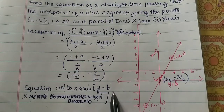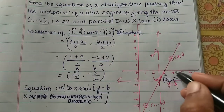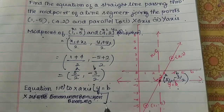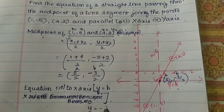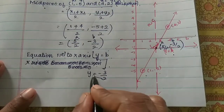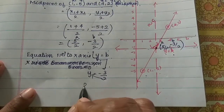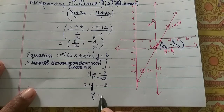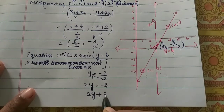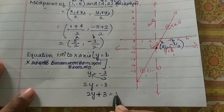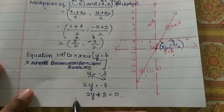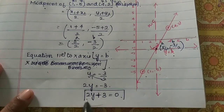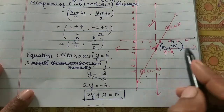The equation is y equal to b, so y equal to minus 3 by 2. Multiplying both sides by 2: 2y equals minus 3. Rearranging, 2y plus 3 is equal to 0. This is the equation of the line parallel to the x-axis.